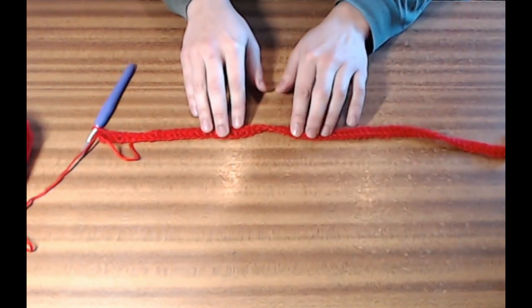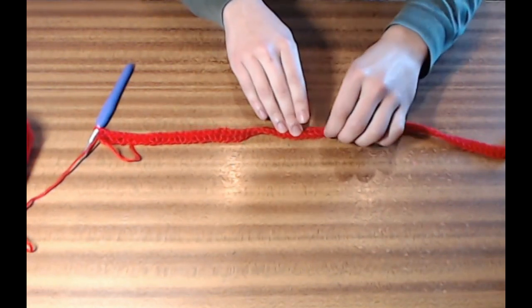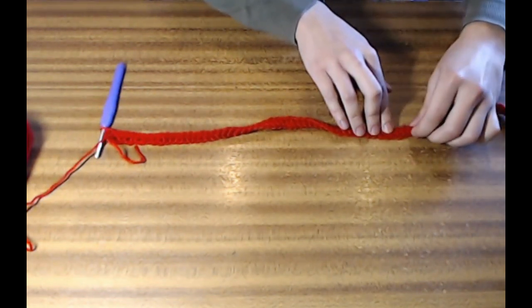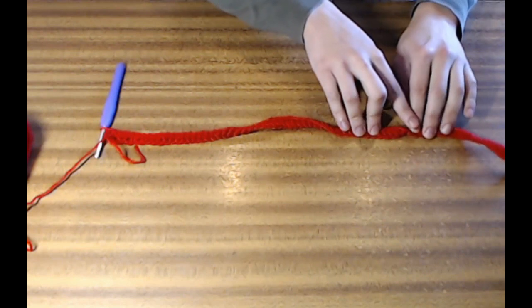This is a half turn, where the strip twists around so that the side on the bottom faces up after the twist. Do three of these, and then flatten out the rest of the strip, and then join the ends together.